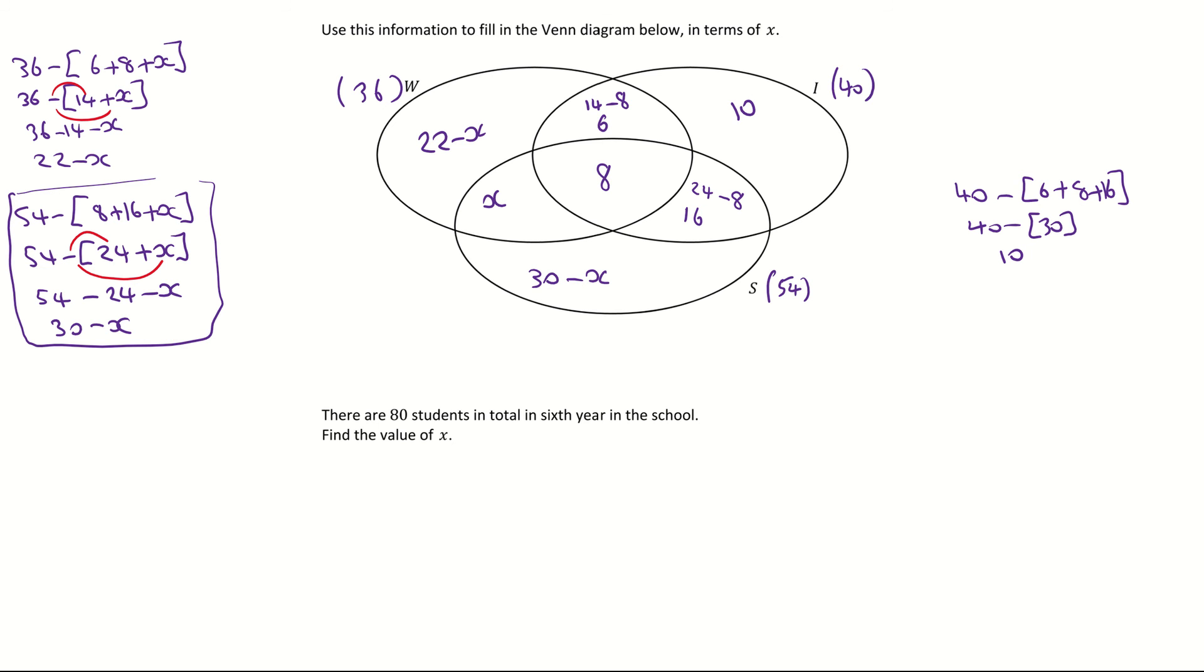Now it doesn't matter the order you write out your terms. I'm going to start here with the 22 minus x. So it's 22 minus x plus my next term which is the 6 and the 8. So I'm going to put those two in plus 6 plus 8. Then I'm going to add on the 10 and I'm going to add on the 16. And finally, I need to add in the x and the 30 minus x. Good practice to highlight them because that way you will make sure you won't miss one. Remember what this equals. This equals the total amount of students which is 80.